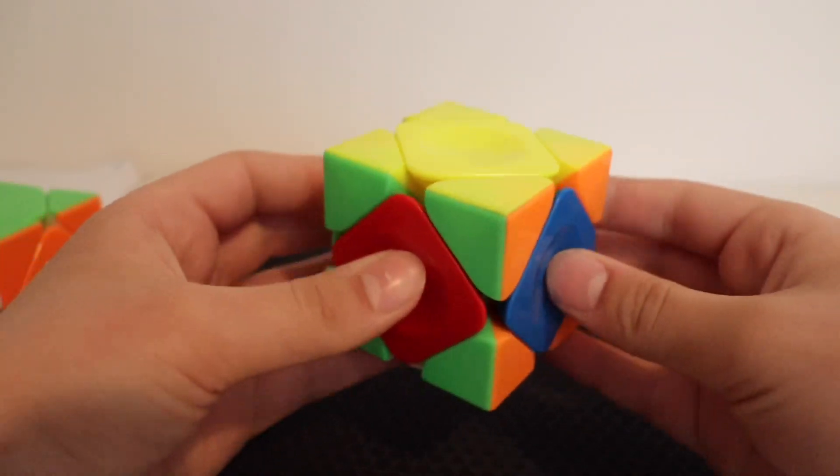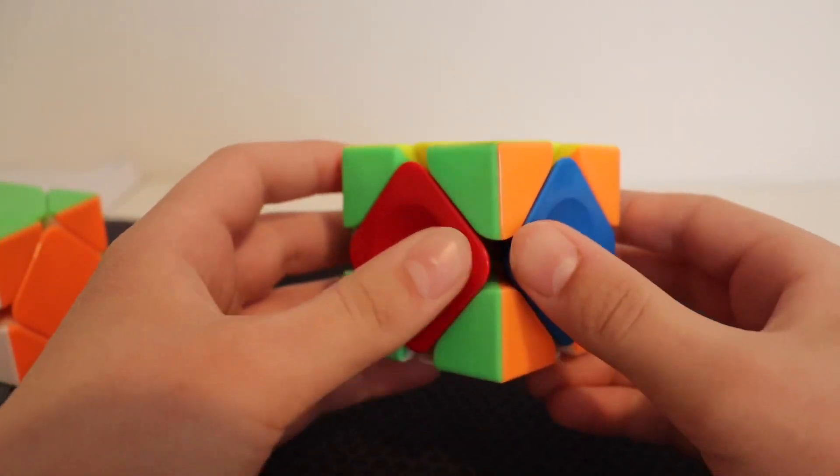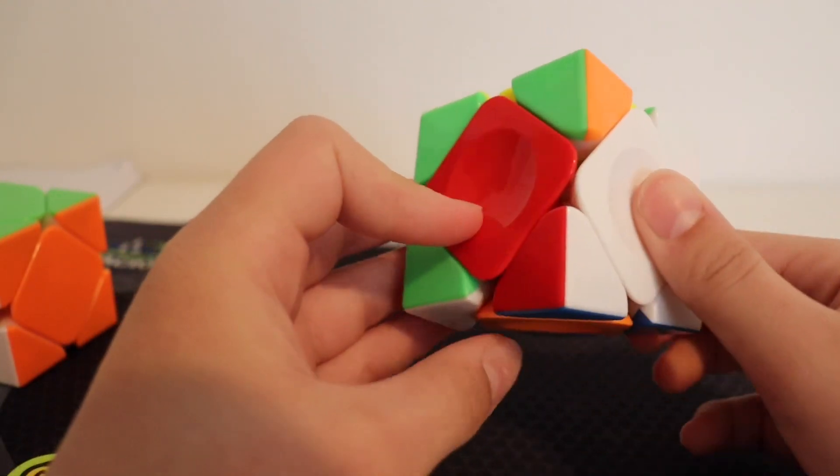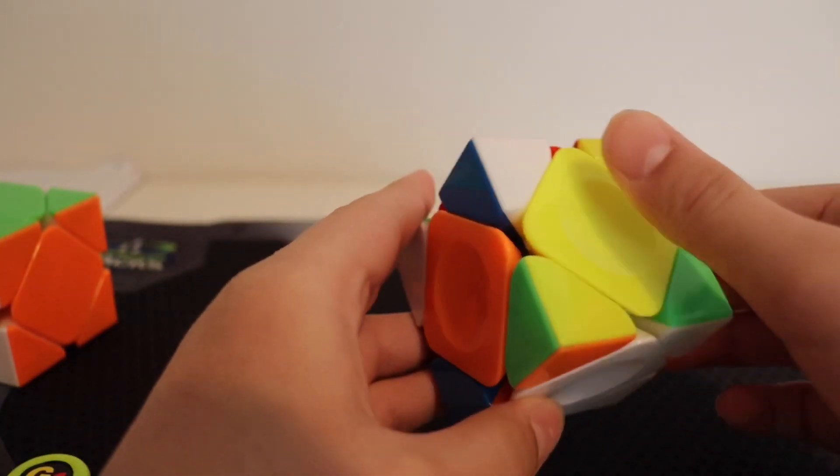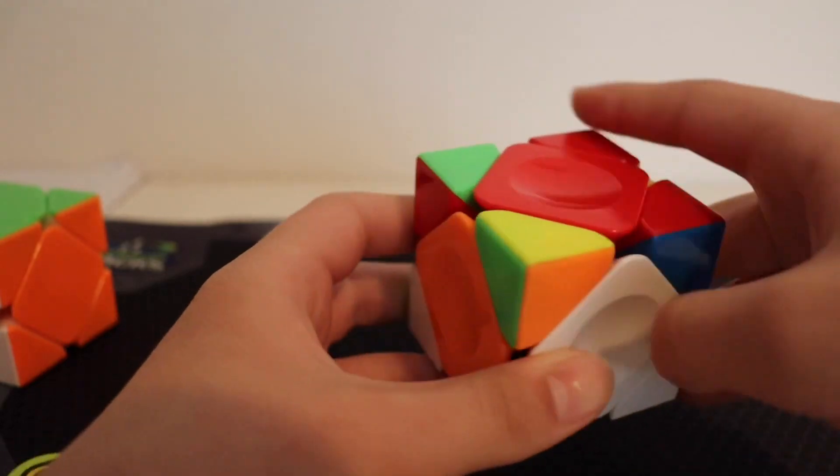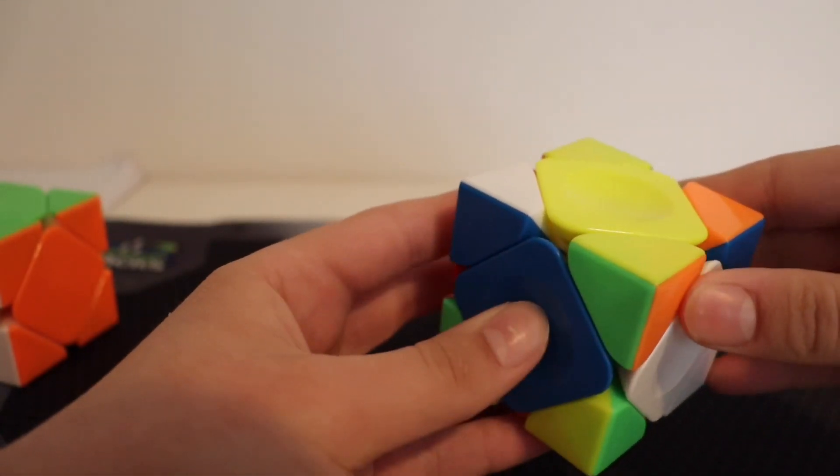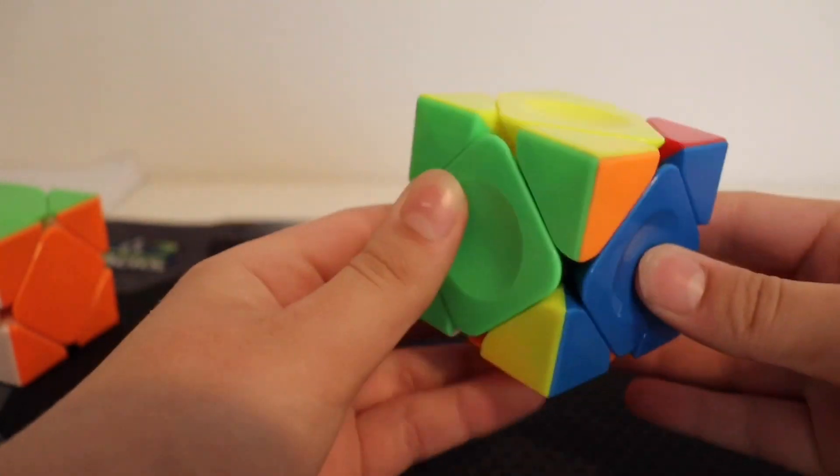The next one is the more advanced solution, and that is you're holding the Z-perm one like this. And what you're going to do is you're going to go up, up, and then you're going to move the yellow center over, move this side down, move the yellow center back, then down, up, up, up.